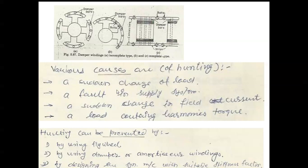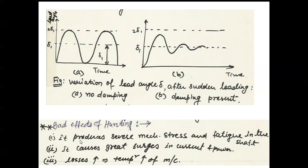Because of hunting, there are certain bad effects on the machine. It produces severe mechanical stress on the rotor and there may be fatigue in the shaft — alternating clockwise and anticlockwise stress may cause shaft failure. Second, oscillations produce large surges in current and power — sudden rises or falls in voltage, current, or power — increasing losses and raising the machine's temperature.